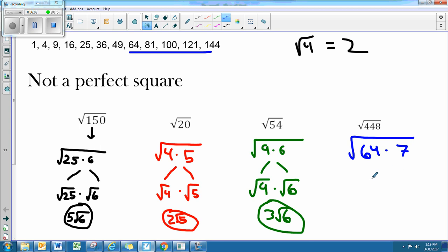Then you would end up with the square root of 64 times the square root of 7. The square root of 64 is 8, and then you would keep the square root of 7. This would be your final answer.